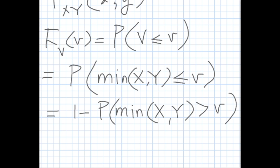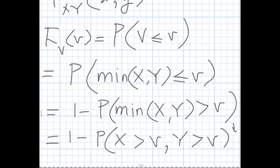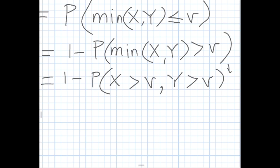If we have a maximum, we don't need to tamper with the probabilities, but for a minimum we want a condition that applies to both variables. If the minimum of X and Y is greater than v, we can write this as the probability that X is greater than v AND Y is greater than v.